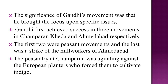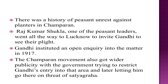Gandhi first achieved success in three movements: in Champaran, Kheda, and Ahmedabad. The first two were peasant movements and the last was a strike of the mill workers of Ahmedabad. The peasantry at Champaran was agitating against the European planters who forced them to cultivate indigo. Rajkumar Shukla, one of the peasant leaders, went all the way to Lucknow to invite Gandhi to see their plight. Gandhi instituted an open inquiry into the matter in 1917.